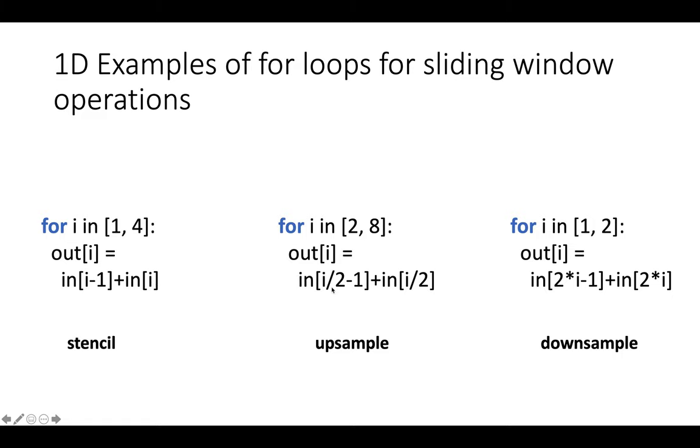In an upsample, the stride is less than 1, so it's a fraction, meaning that you apply the function to the same window multiple times. Here the stride is 1 half or floor of the value divided by 2. In a downsample, the stride is larger than 1, so you're basically skipping some windows when you produce the output.